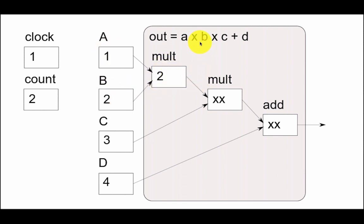We can't do the result of A times B times C until we've got the result of A times B. And we can't add D to it until we've got this multiplication calculated here.